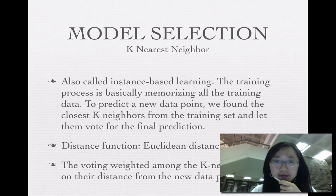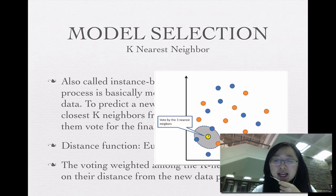The training process is basically memorizing all the training data. To predict a new data point, we find the closest k neighbors from the training set and let them vote for the final prediction. For the distance function, I use Euclidean distance. And the voting is weighted among the k-nearest neighbors based on their distance from the new data point. This picture shows how the k-nearest neighbor works.